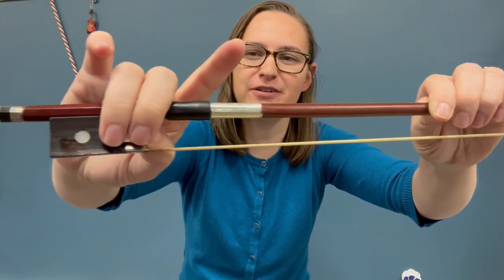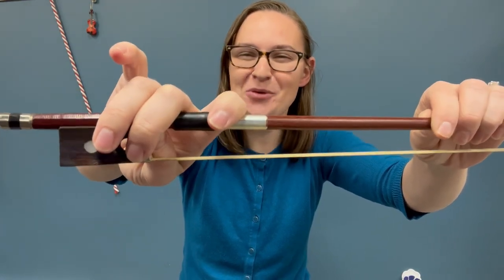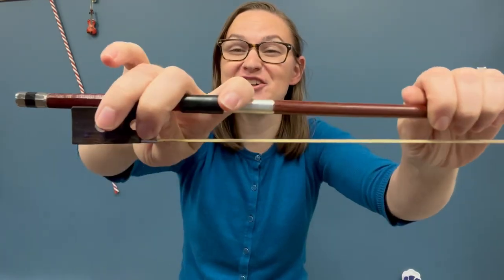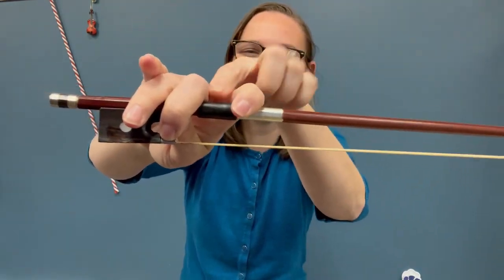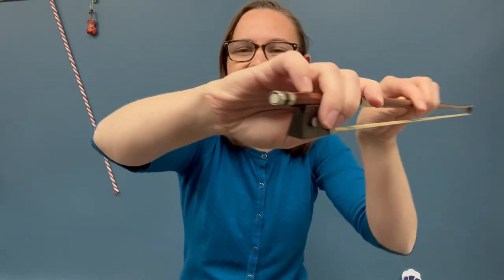My middle finger and ring finger wrap around the front. My middle finger touches the silver part, ring finger right next to it. Pointer finger goes curved and on its side on this silver winding. There should be a space between my pointer finger and my middle finger right here. And then my pinky perches like a bird on a branch.